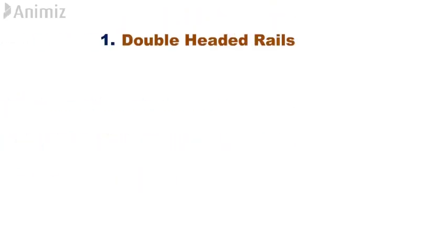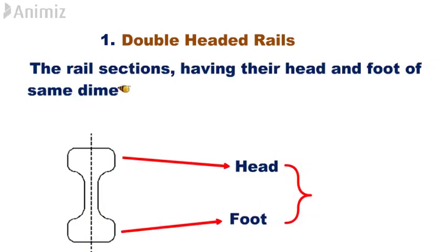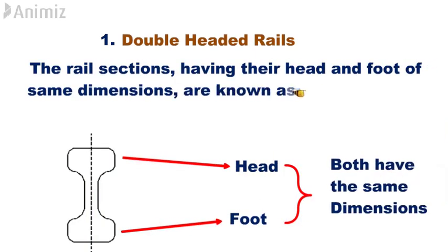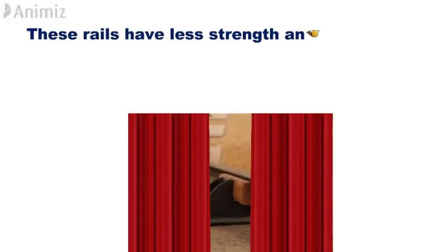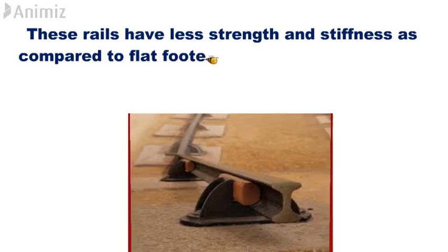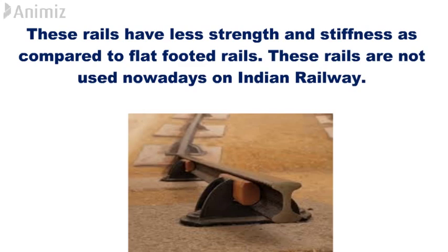1. Double-headed rails. The rail sections having their head and foot of the same dimensions are known as double-headed or dumbbell rails. These rails have less strength and stiffness as compared to flat-footed rails. These rails are not used nowadays on Indian Railway.